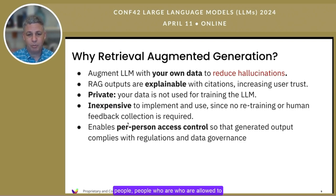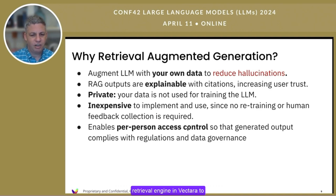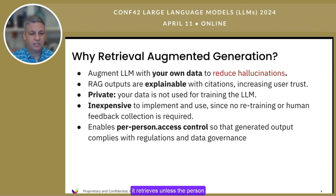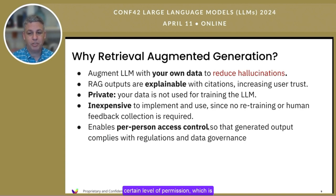and I still want to use them in RAG but only for the HR people or people who are allowed to see the results, I can ask the retrieval engine in Vectara to not include documents in the set of facts it retrieves, unless the person issuing the query has permission for that. So that allows you to create responses that are customized to a certain level of permission, which is really helpful.